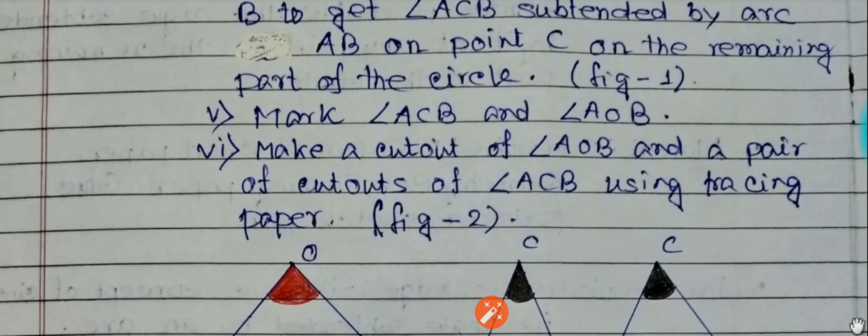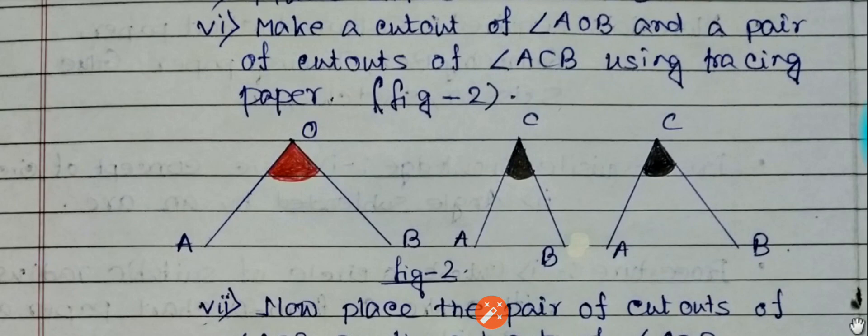Next, we need to make some cutouts. One cutout of angle AOB like this and two cutouts of angle ACB like this.